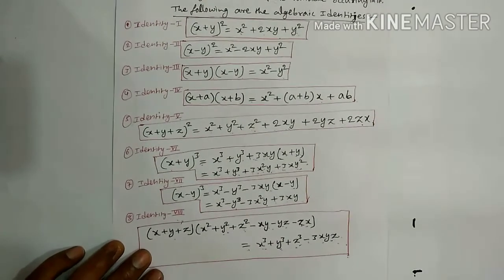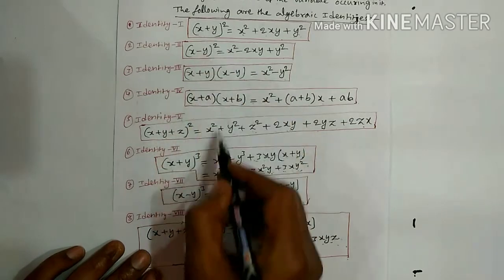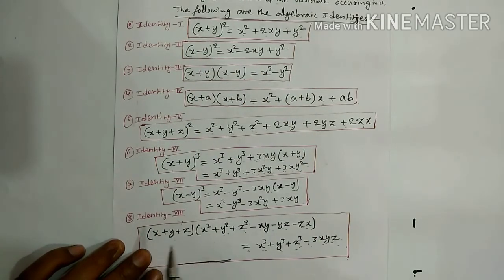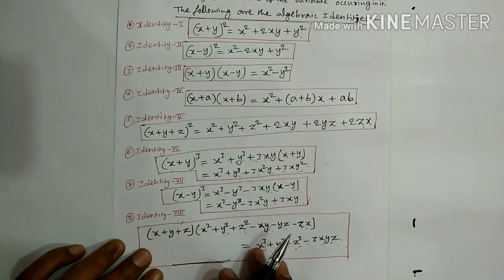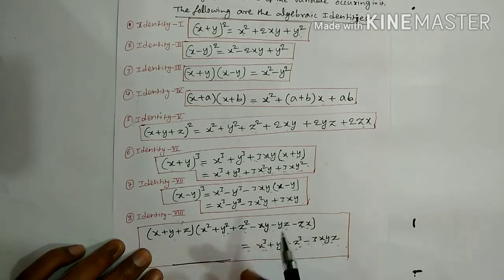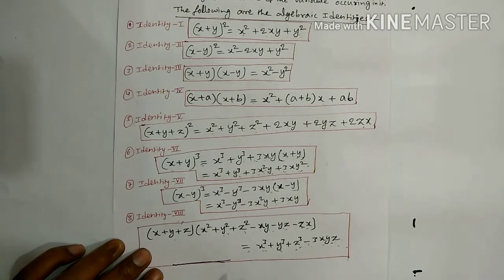Students, you must memorize all these — by hard means you don't just read, you write them once, twice, thrice. If you practice these formulas and identities, then Exercise 2.5 will be very easy for you.